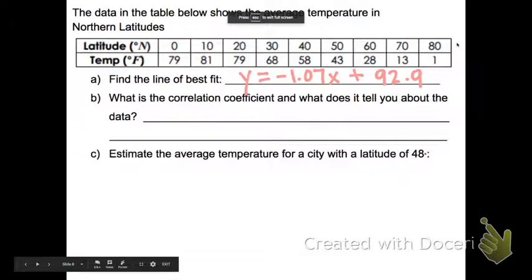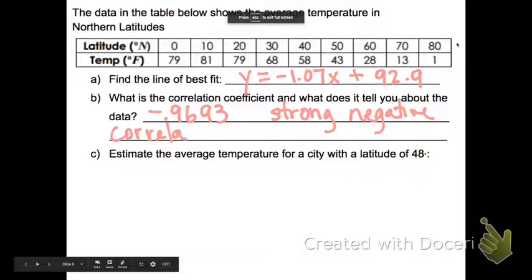It says, what is the correlation coefficient? It was negative 0.9693. And it tells me that there is a strong negative correlation between the latitude and the temperature.